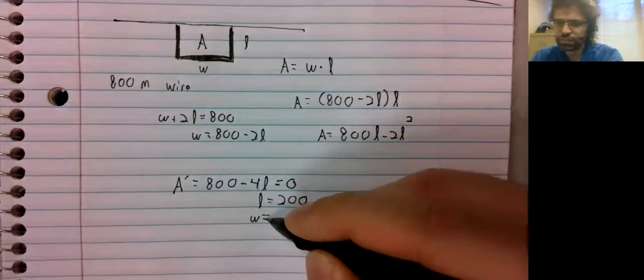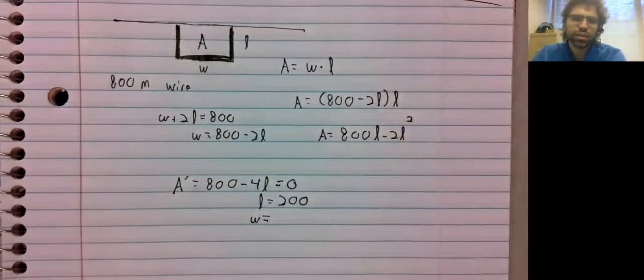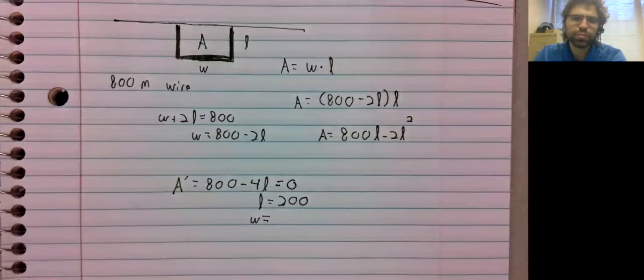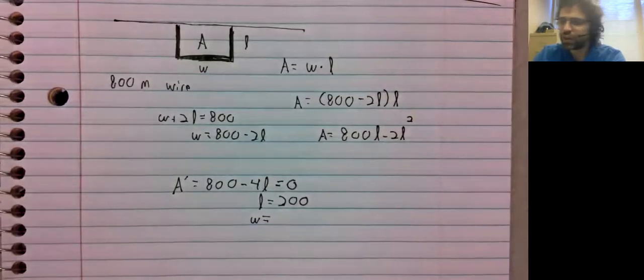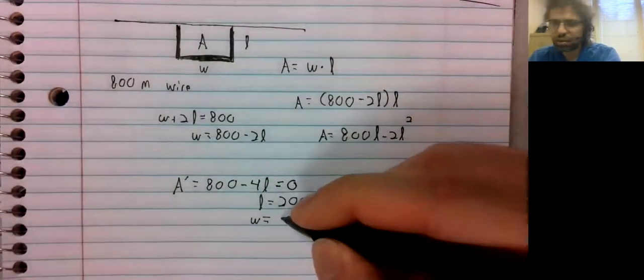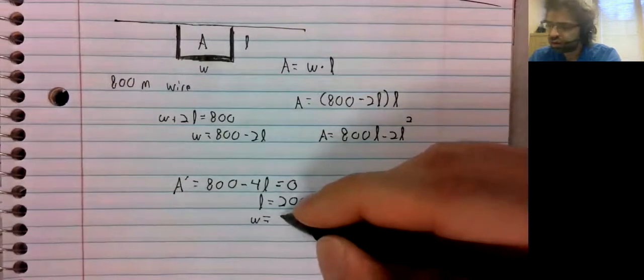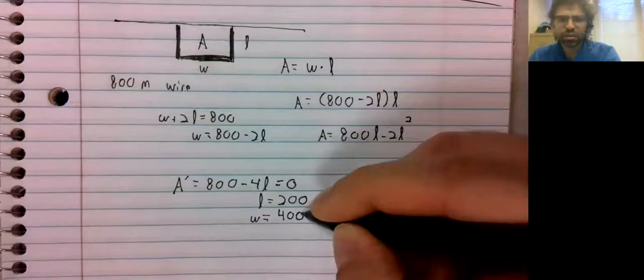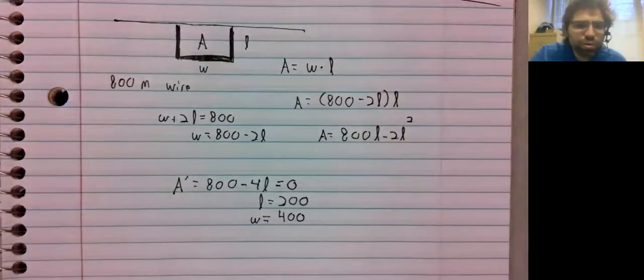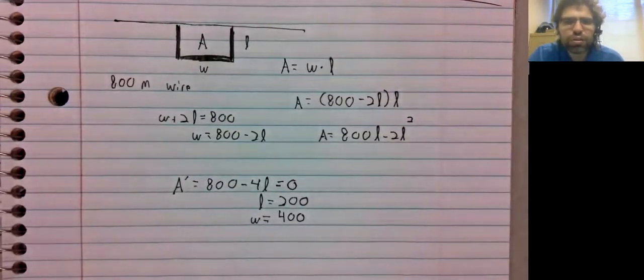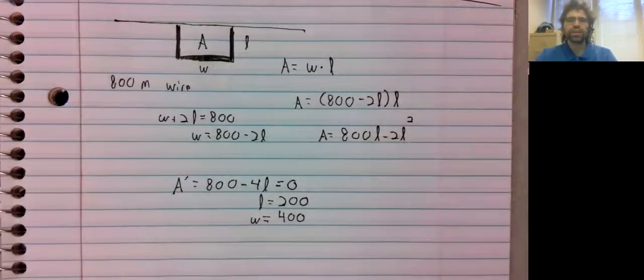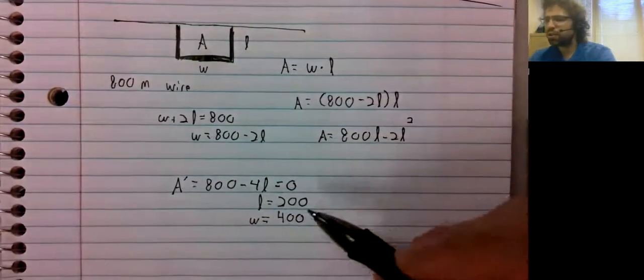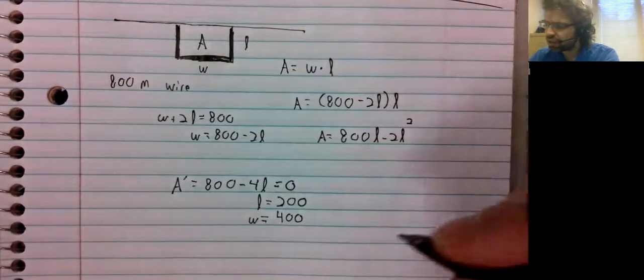And we have this formula for the width. So 800 minus 400. And let's make sure we're clear on what the question is actually asking. What are the dimensions? We've got that.